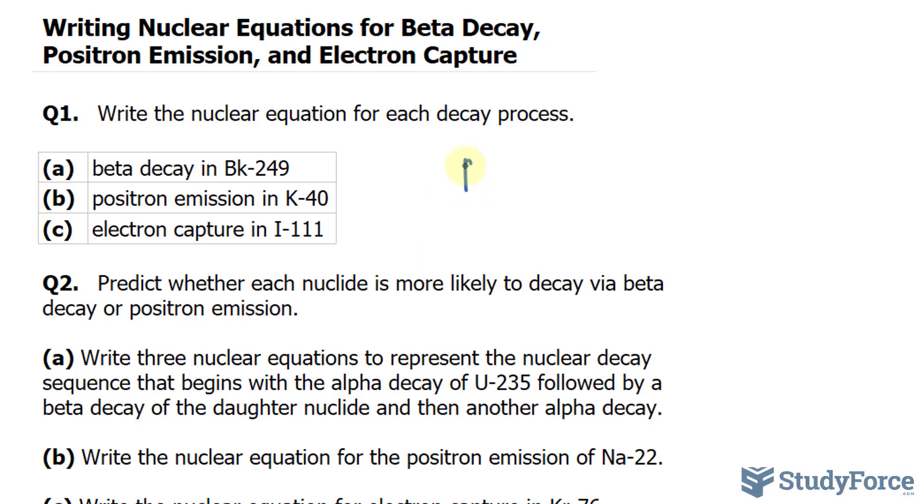So let's write down BK, which is the atomic symbol of this element, and it has an atomic mass of 249. Its proton count before the decay is 97, and as mentioned, the atoms will increase in their atomic number. So this becomes 98.